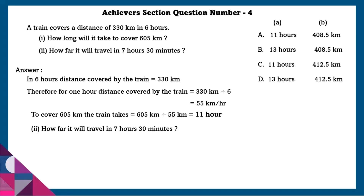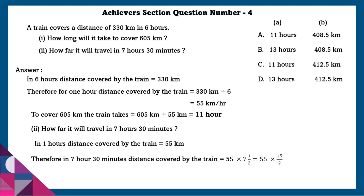Next: how far will it travel in 7 hours 30 minutes? In 1 hour, the distance covered by the train is 55 kilometers. Therefore, in 7 hours 30 minutes, the distance covered is equal to 412.5 kilometers.